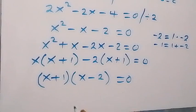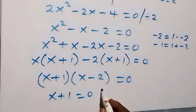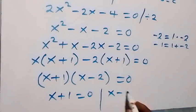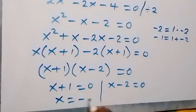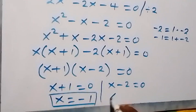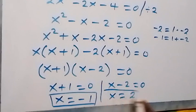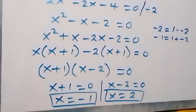From here, x plus 1 equals 0 gives x equals negative 1, and x minus 2 equals 0 gives x equals 2. These are the two values of x for this equation. Thank you for watching.